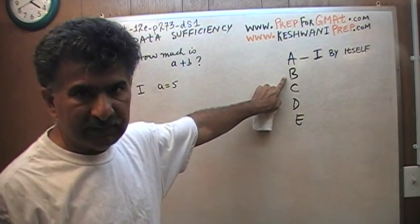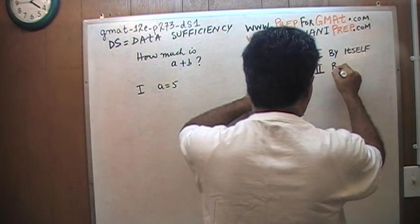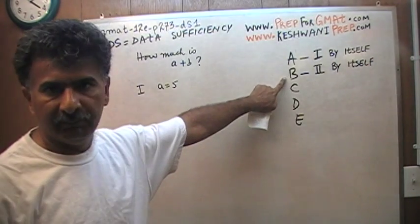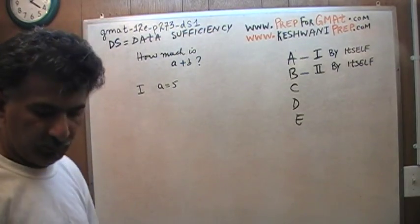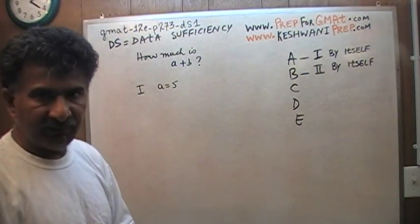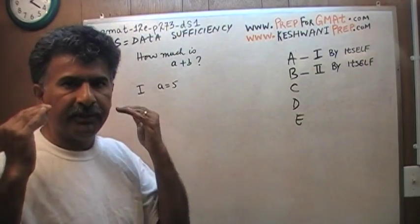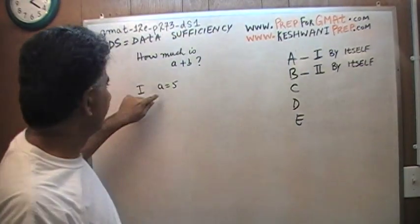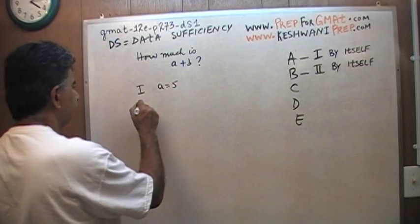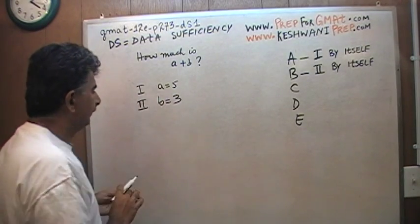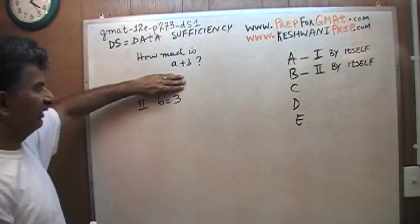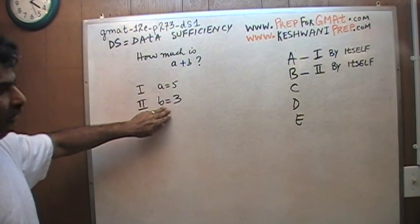You are to pick answer choice B if the second statement by itself is sufficient to answer the question. When you're looking at the second statement by itself, you are to forget whatever it is that you saw in the first statement. In the first statement they told me A equals 5 — I have to forget that and only look at what is given in the second statement. In the second statement, I'm told that B equals 3. Just by looking at the second statement by itself, can I answer the question, how much is A plus B? Obviously not, because I don't know how much A is. So the answer here cannot be B.